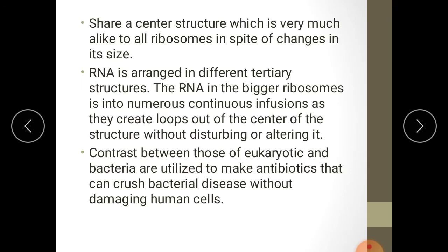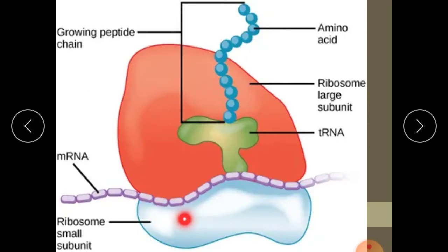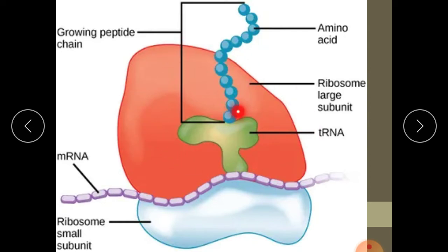Whereas the bigger subunit is the place where the amino acids are included. Looking at the diagram, this is the smaller subunit, to which mRNA is attached. This is the mRNA and this one is the larger subunit, to which amino acids are added. This is the polypeptide chain. Transfer RNA brings the amino acids from the cytoplasm to the ribosome for the synthesis of the polypeptide chain.